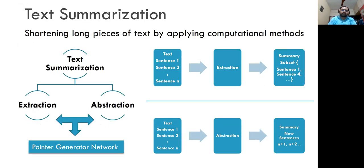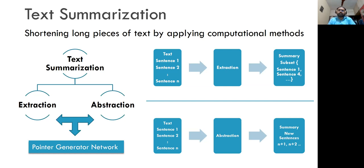Let's discuss the basics of text summarization. Text summarization is the shortening of long pieces of text by applying computational methods. Text summarization can be classified into two types: extraction and abstraction. On the right-hand side there are two diagrams. The first one on top shows how extractive summarization technique works. You have n sentences, then you apply some computational methods: removing stop words, counting word frequency, assigning rank to statements based on frequency, then picking the highest-ranked sentences.